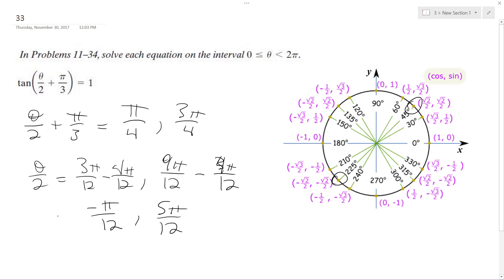So then I multiply by 2 on both of these, so I end up with negative pi over 6 and 5 pi over 6.